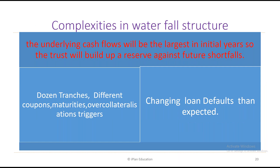There are complexities in the waterfall structure when computing default sensitivities and implied correlation. As a FRM Level 2 student, you are expected to have thorough understanding of this theoretical portion. Initially, the underlying cash flows will be largest in early years, and the trust will build up a reserve against future shortfalls. In practice, securitizations have more than a dozen tranches with different coupons, maturities, and over-collateralization triggers.